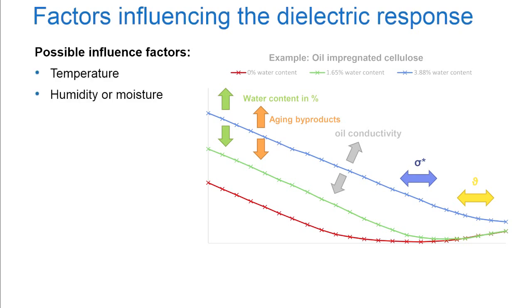Humidity or moisture, homogeneity, conductivity, for example of oil, and aging byproducts.